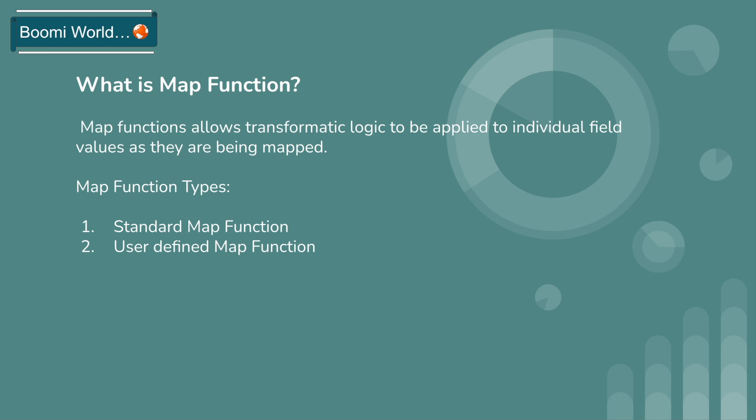Now suppose for the same scenario the target system asks you to first concatenate both names with a delimiter hyphen, and after that convert that string into uppercase or lowercase. For a single field they ask you to perform two steps: first concatenation, then convert to uppercase or lowercase. In that case you need to use user-defined map functions.